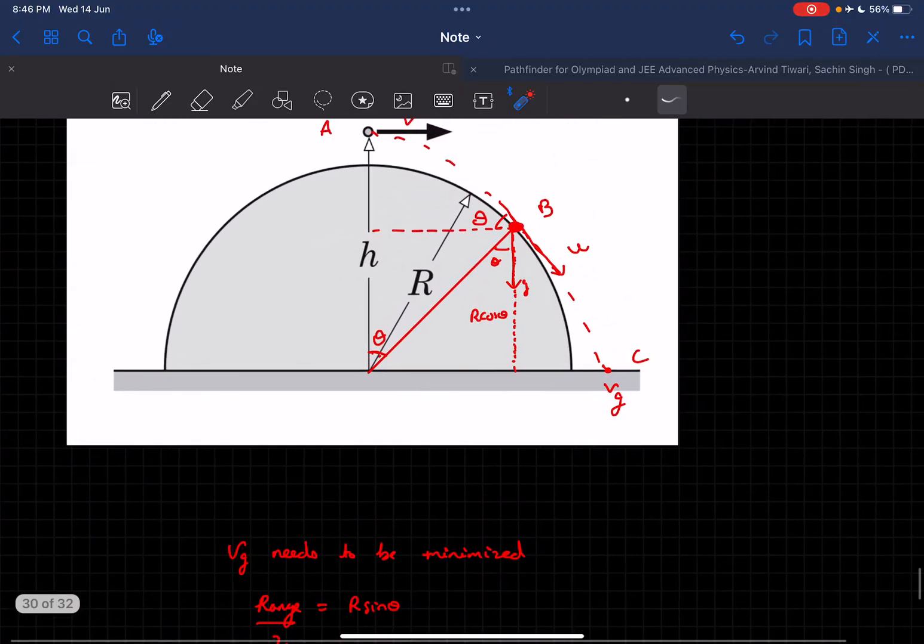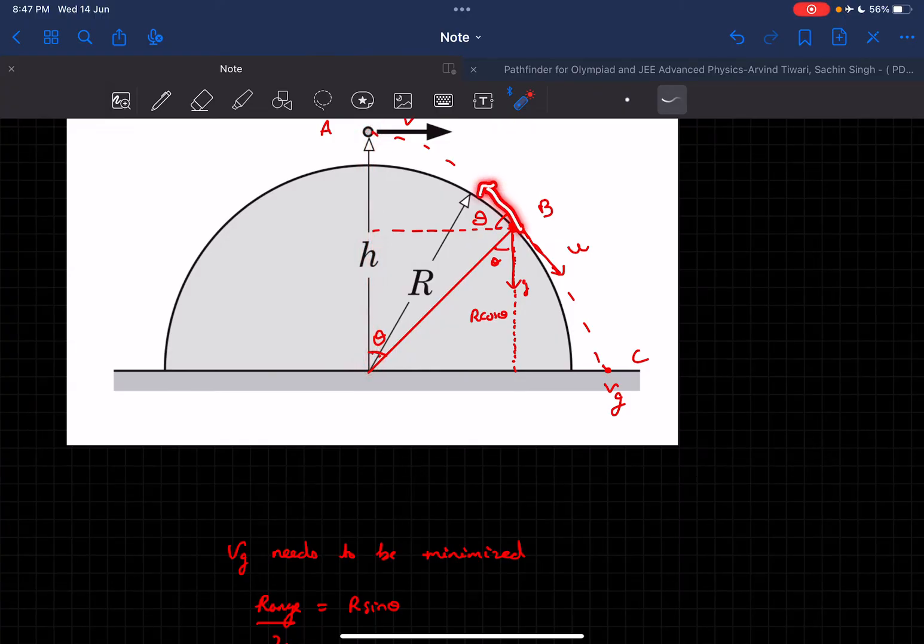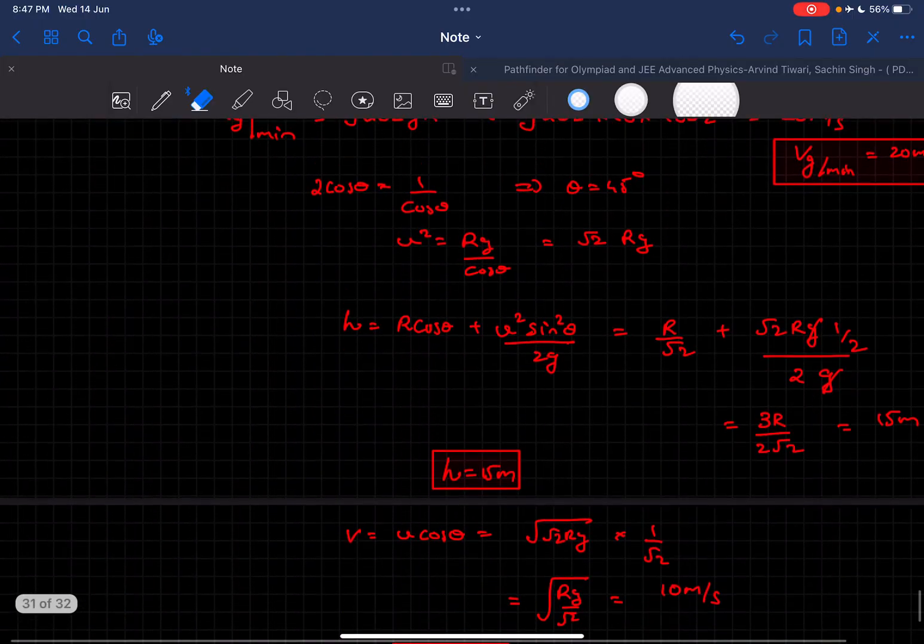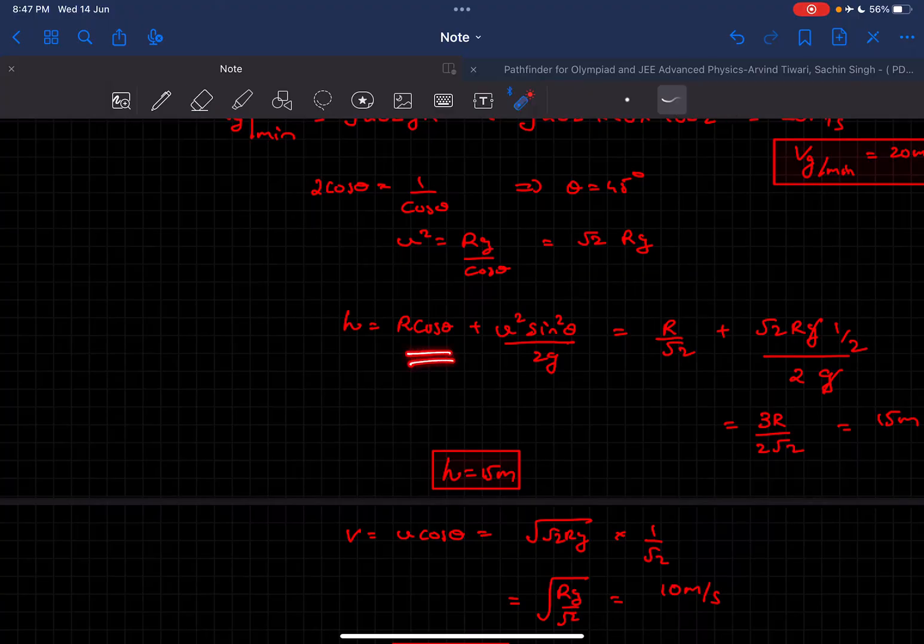Next, we need to find the height h. Since we know u, we can find the maximum height of the projectile, h_max. Adding R cos(theta) to h_max gives us h. So h = R cos(theta) + h_max. Solving this gives h = 15 meters.